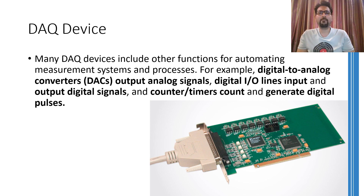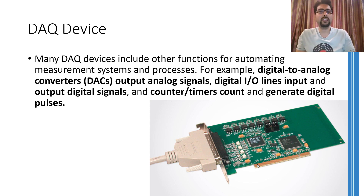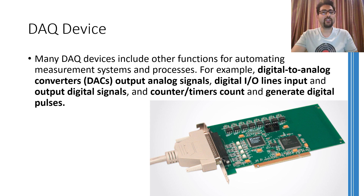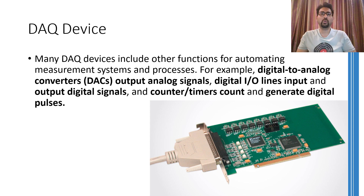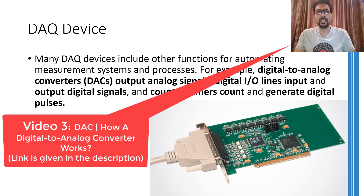Apart from these fundamental operations, there are many other operations that a DAC device can perform. For example, some DAC devices do not have any digital-to-analog converter in them, whereas others have a built-in digital-to-analog converter as well. Moreover, some applications demand digital inputs and outputs where the sensor is generating a digital output. Furthermore, a DAC device can have counters, timers, abilities to generate digital pulses and many other things. I would recommend learners to go through the referenced videos explaining the working of two different kinds of ADCs and a third video explaining the working of a simple digital-to-analog converter.